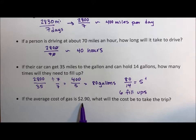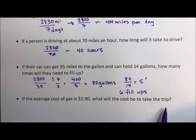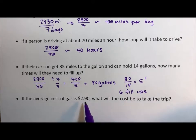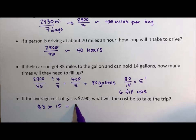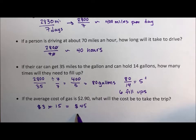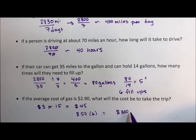If the average cost of gas is $2.90, what will the cost be to take this trip? I am going to say that this is about three dollars — estimation, rough numbers. So it's three dollars, and each fill up is 14 gallons. You could go up to 15 if you wanted even easier numbers, let's go to 15. So three times 15 is about $45. And then we know that we're filling up six times. You could even go up to $50 times six and make that about $300 for gas. That's an overestimation, but overestimating on a road trip is not the worst thing to do.